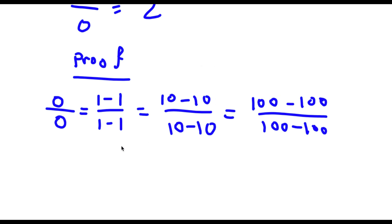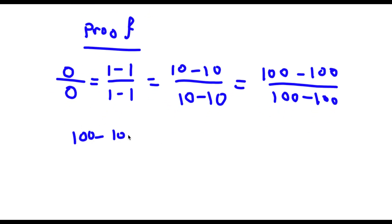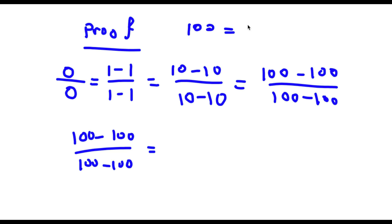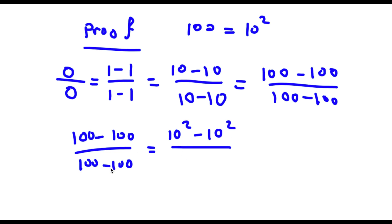So now I have 100 minus 100 over 100 minus 100. Well, 100 is equal to 10 squared, so for my numerator I'm going to write 10 squared minus 10 squared. However, for my denominator this is going to be different — 100 is also the same thing as 10 times 10, so I'm just going to write 10 times 10 for my denominator, giving me 10 times 10 minus 10 times 10.